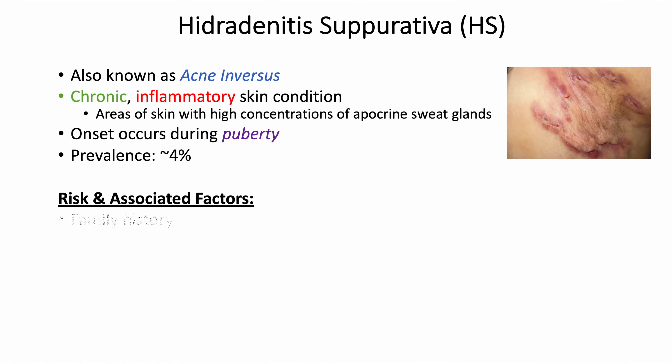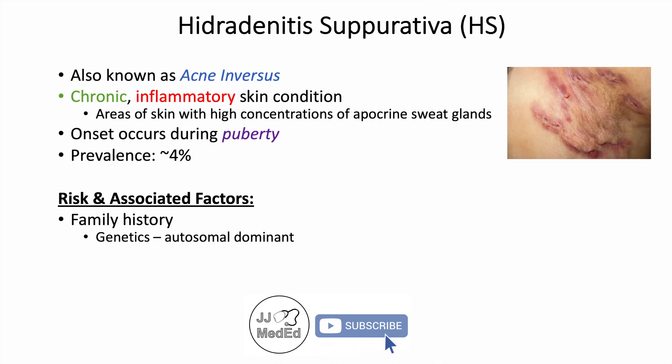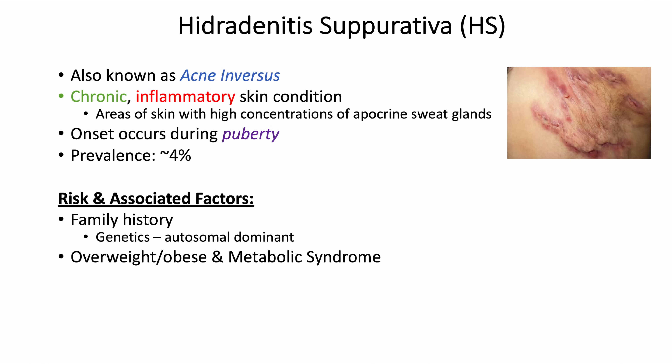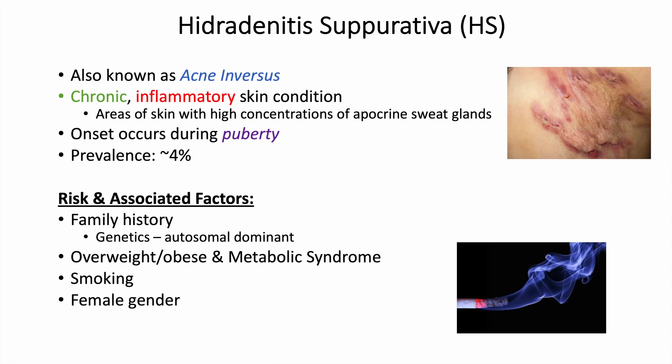There are specific risks and associated factors with regards to hidradenitis suppurativa. One of them is family history — there seem to be genetic components, with an autosomal dominant trait, so if one of your parents has it, you have a higher likelihood of having it as well. Being overweight, obese, or having metabolic syndrome increases your risk, as does smoking. Being of the female gender is also a risk factor.